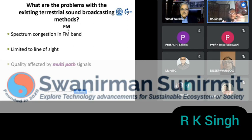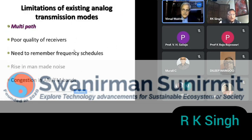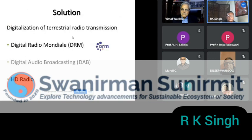The problem of spectrum congestion in FM is a reason to move to digital. In FM, the moment any building, tower, or tree comes in the way, the signal stops, and quality is affected by multi-path signals. Other issues include poor quality receivers, the need to remember frequency schedules, rise in man-made noise, and congestion in AM and FM bands. Listeners are now expecting CD quality. The goal is coverage across static, mobile, portable, and economical receivers. The different digital terrestrial radio standards include DRM, Digital Audio Broadcast, and HD Radio.